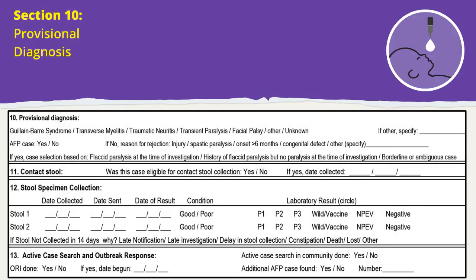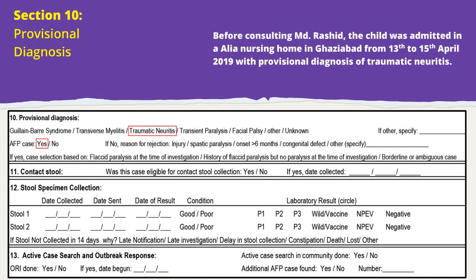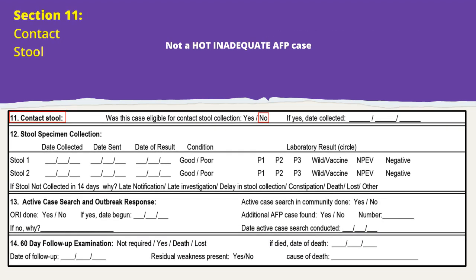Section 10 — Provisional Diagnosis — is mandatory for all AFP cases. If the investigated case is not an AFP, encircle the reason for the same. Encircle one of the three reasons for labelling the case as AFP: flaccid paralysis at the time of investigation, history of flaccid paralysis but no paralysis at the time of investigation, or borderline or ambiguous case. The current case is not a hot or inadequate AFP case and hence is not eligible for contact stool sampling.